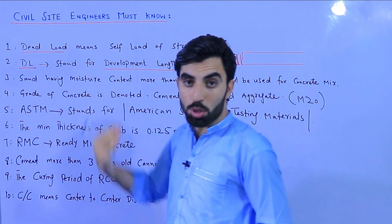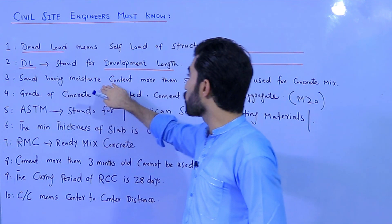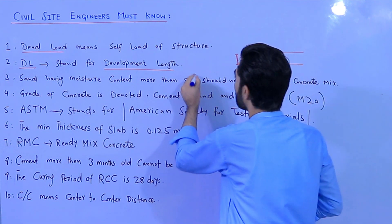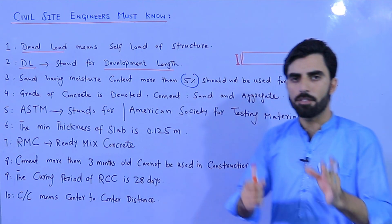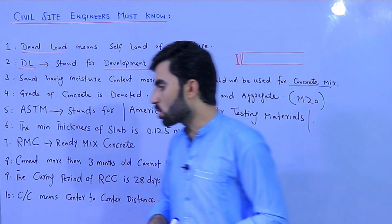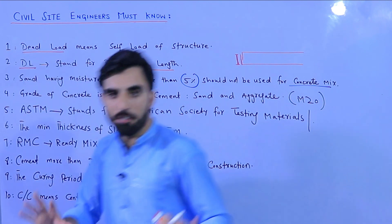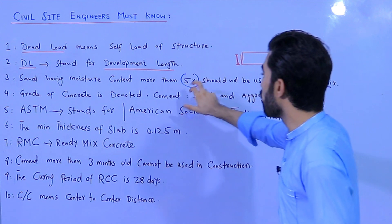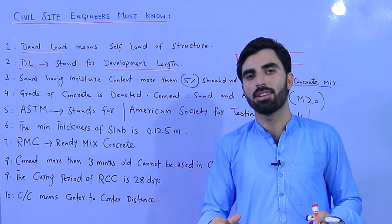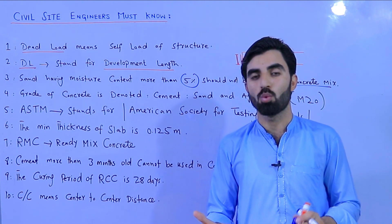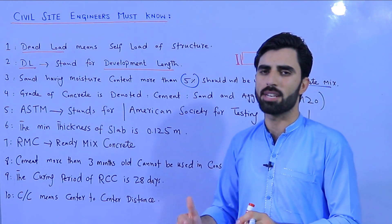The third point is about sand quality used in concrete and mortar. Sand having a moisture content of more than 5% should not be used for the concrete mix. If the moisture content of sand exceeds 5%, you will face problems such as seepage in the building, which you cannot control once construction is completed.